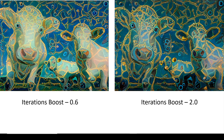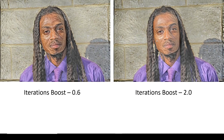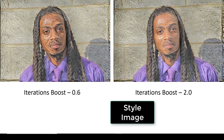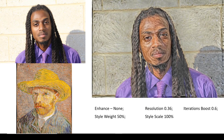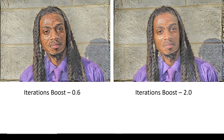Iteration boost: here I've got it at 2.0 versus the original at 0.6. Iteration boost is a little mysterious to me, but I think it's basically etching the style more deeply into the picture — it retains the original image but the style is added on more. It's a little confusing because one looks more etched than the other, but the source image has very soft lines, so I think it's making the lines more soft. I'm still figuring out iterations.